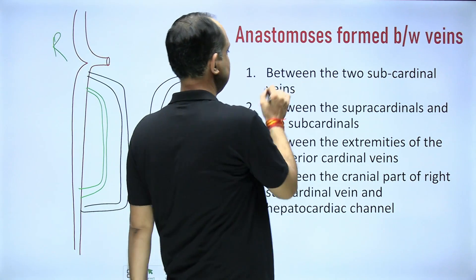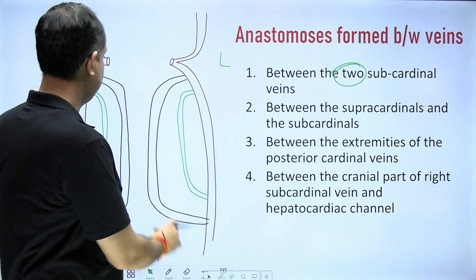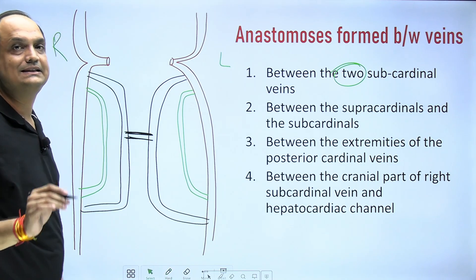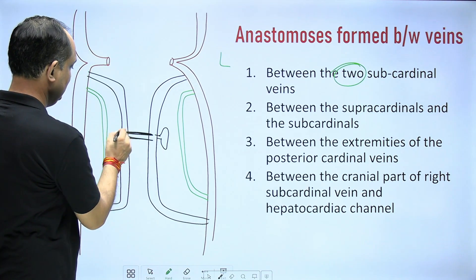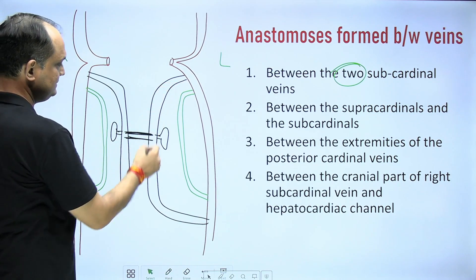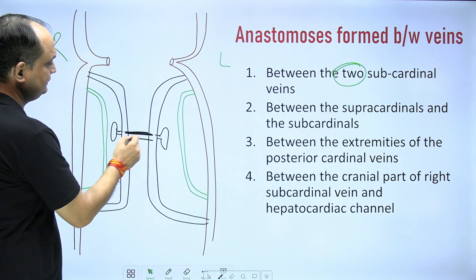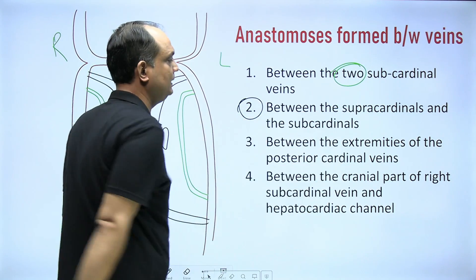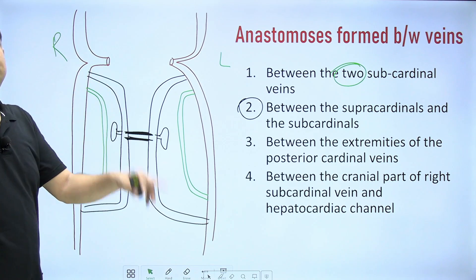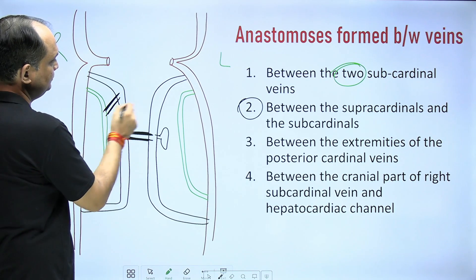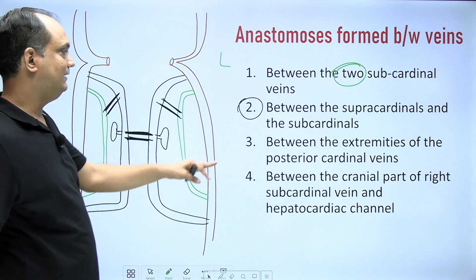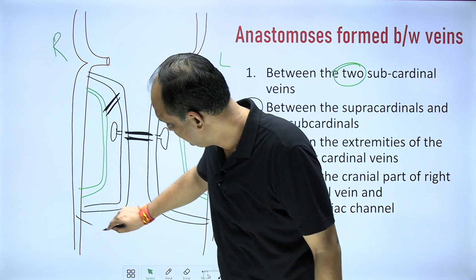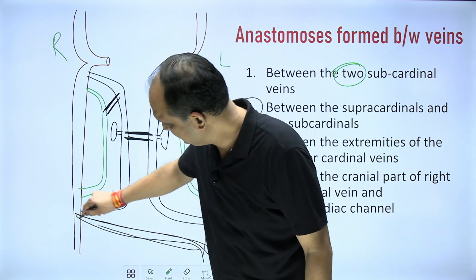The first anastomosis develops between the two sub cardinal veins as a midline transverse anastomosis at the level of the developing kidneys — this is where the renal veins enter the kidneys. The second anastomosis develops between the supra cardinal and sub cardinal vein. The third anastomosis develops between the lower ends of the two posterior cardinal veins.